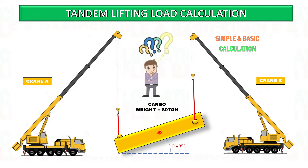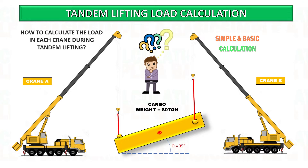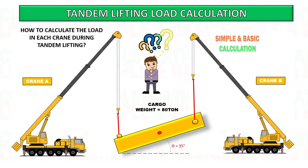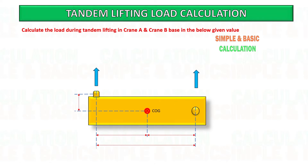In this video you will learn how to calculate the load in each crane during tandem lifting. In the example given below, calculate the load in crane A and crane B during tandem lifting. The weight of the cargo is 80 tons.